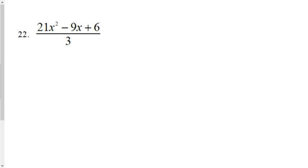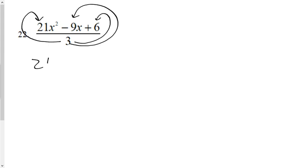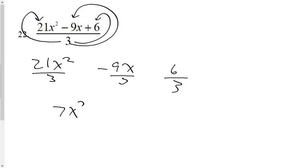Question 22: division of a trinomial by a monomial — still use distributive property. Divide each term separately by 3: 21x squared over 3 gives 7x squared; negative 9x over 3 gives negative 3x; and 6 over 3 gives positive 2. Therefore the solution to one-third of 21x squared minus 9x plus 6 is 7x squared minus 3x plus 2.